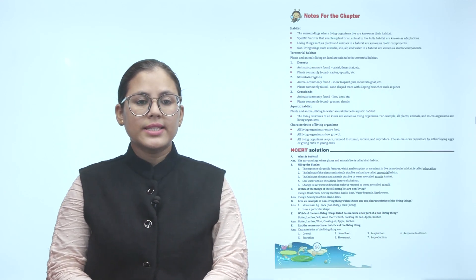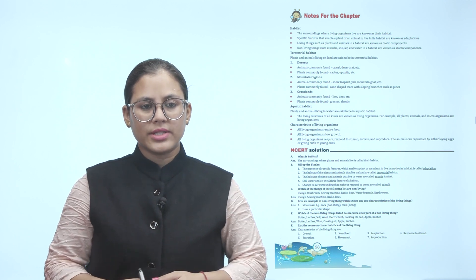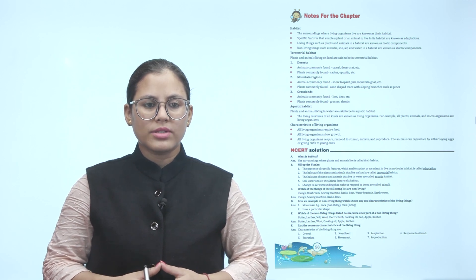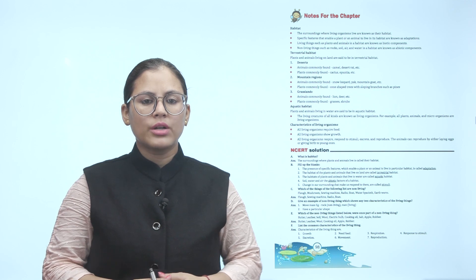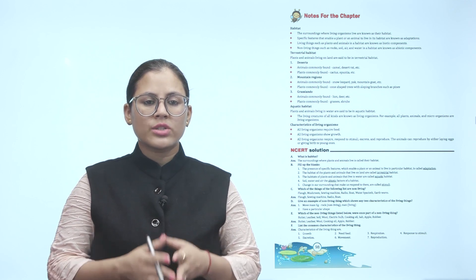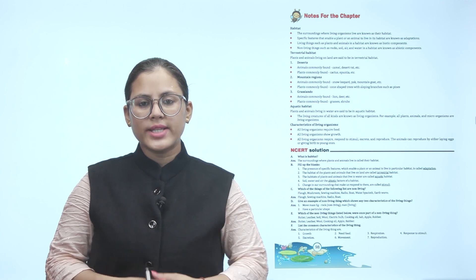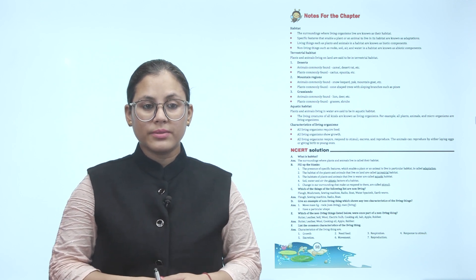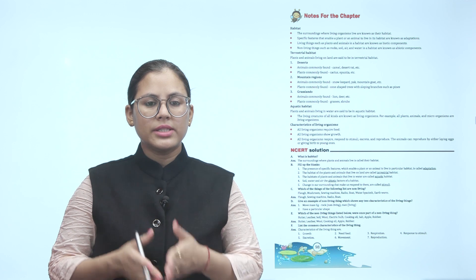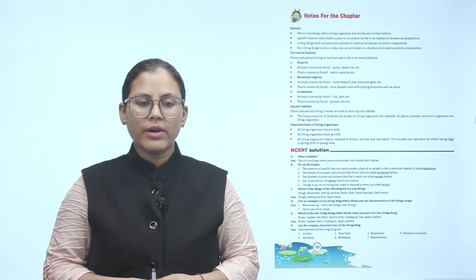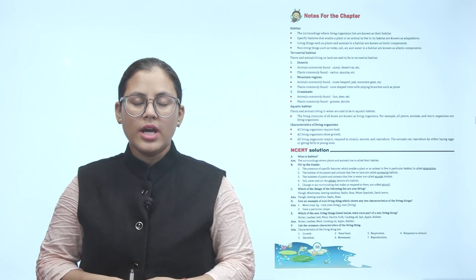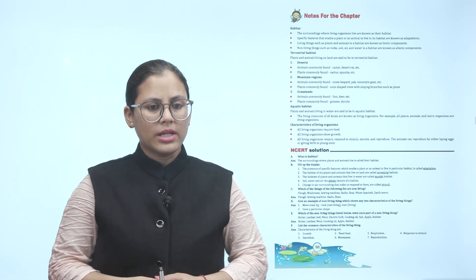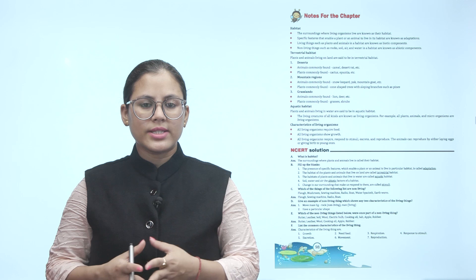Notes for the chapter. Habitat: the surroundings where living organisms live are known as their habitat. Specific features that enable a plant or an animal to live in its habitat are known as adaptations. Living things such as plants and animals in a habitat are known as biotic components. Non-living things such as rocks, soil, air and water in a habitat are known as abiotic components. Terrestrial habitat: plants and animals living on land are said to be in terrestrial habitat. Desert animals commonly found: camel, desert rat, etc. Plants commonly found: cactus, opuntia, etc. Mountain regions animals commonly found: snow leopard, yak, mountain goat, etc. Plants commonly found: cone-shaped trees with sloping branches such as pines.